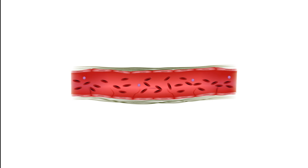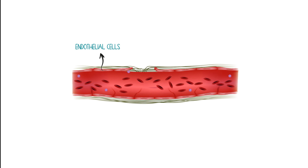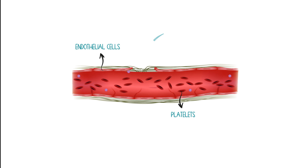Let's see how the clot is formed, so we can understand how the medications will work. Here we have a blood vessel made of endothelial cells. Say that an injury happened here — the story begins with platelets. Prostacyclin and nitric oxide are synthesized by intact endothelial cells and act as inhibitors of platelet aggregation. In damaged endothelial cells, less prostacyclin is present, resulting in platelet aggregation.